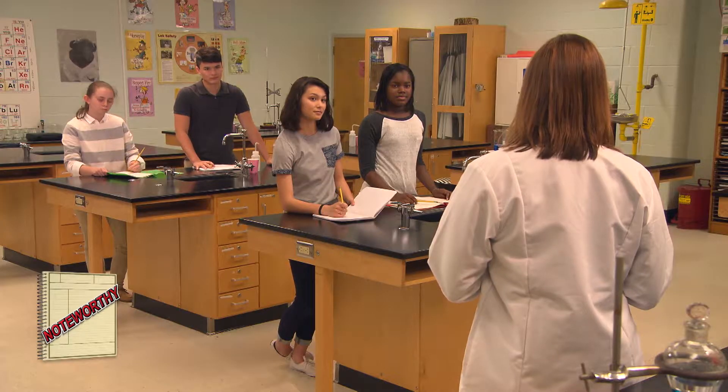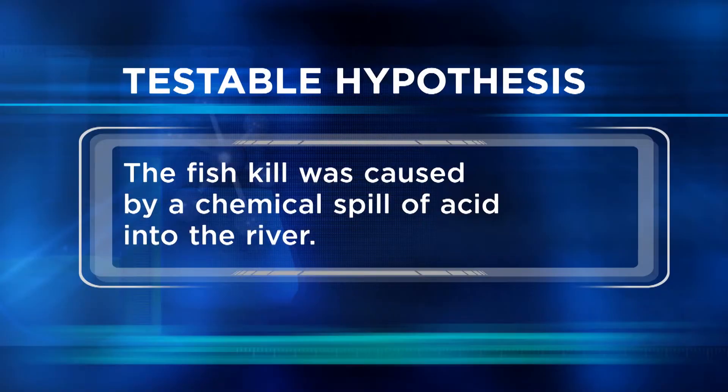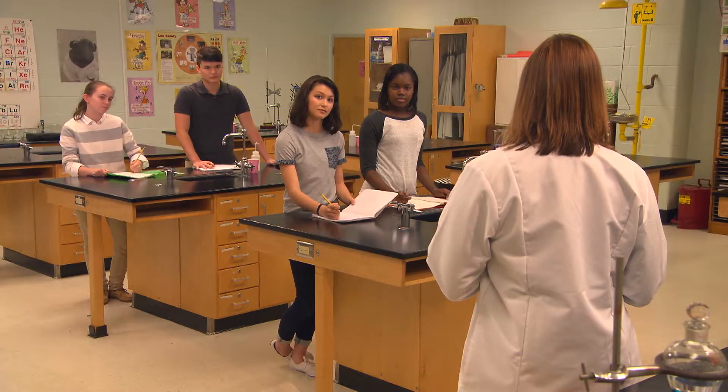What's the testable idea of this experiment? We're testing the hypothesis that the fish kill was caused by an acid spill into the river. The great thing about a prediction like this is that you don't need to be correct to have a good experiment. The experiment will tell you whether you have evidence to support or reject your hypothesis. That's one of the nice things about science — it's all about finding reliable evidence.